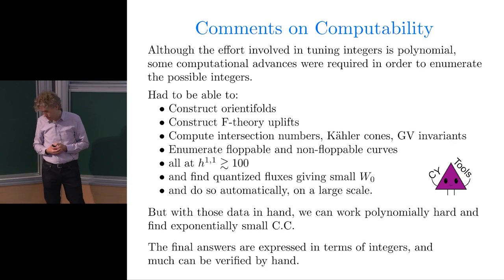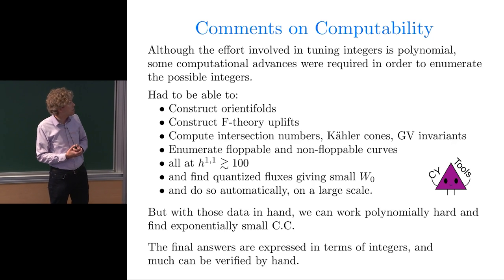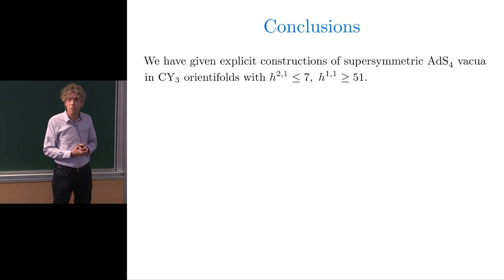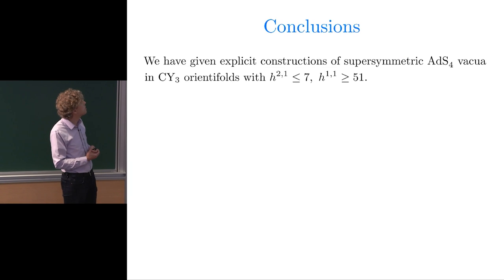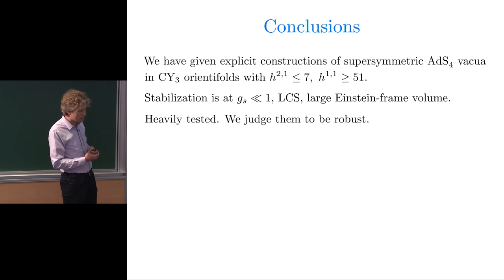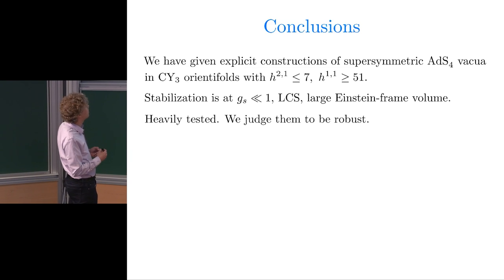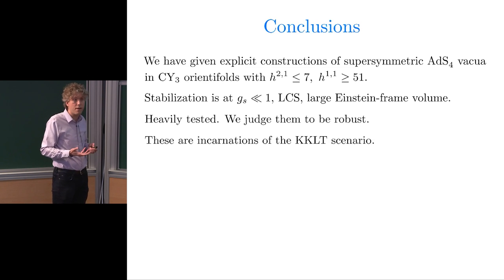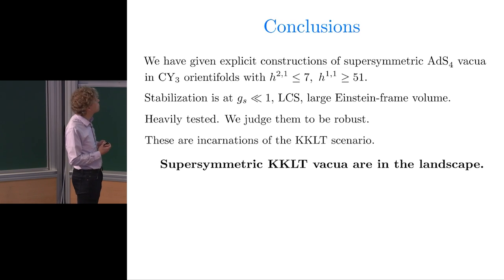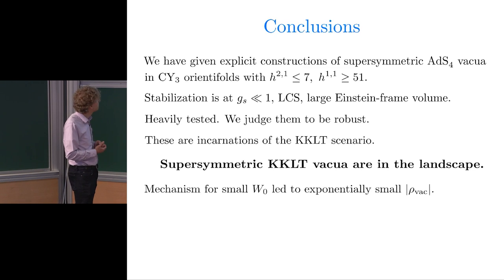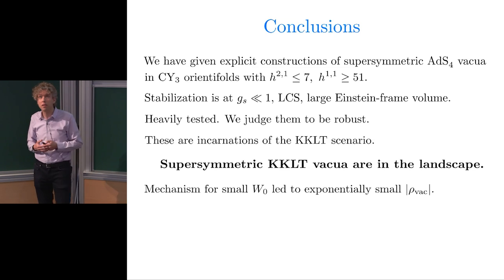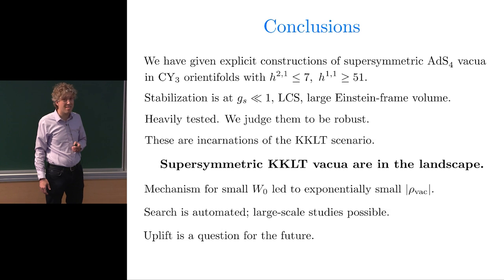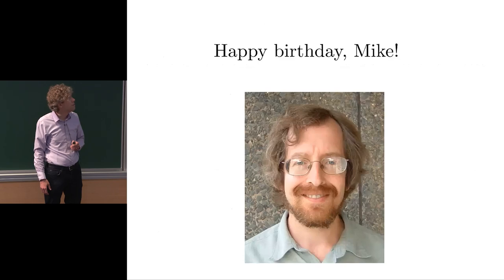In conclusion, we've given explicit constructions of supersymmetric AdS4 vacua in compactifications of type 2B string theory on Calabi-Yau threefold orientifolds. The stabilization is at weak string coupling, large complex structure, large Einstein frame volume. These are very heavily tested. We judge them to be quite robust. They're incarnations of the KKLT scenario, although with some special structures. Our claim then is that supersymmetric KKLT vacua are part of the string landscape. The mechanism we used for a small W naught led to exponentially small values of vacuum energy. Because the search is automated, large-scale studies are possible. We're engaged in some. More results will come out. The uplift to de Sitter space is very much a question for the future. Happy birthday, Mike.